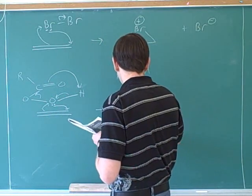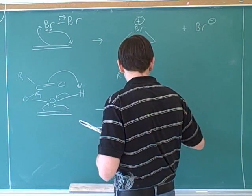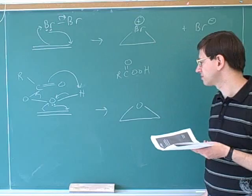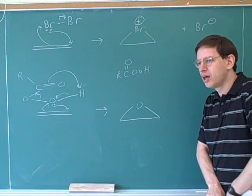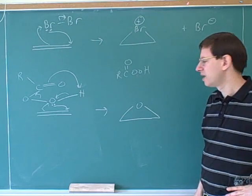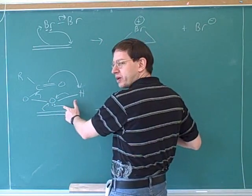What are our products going to look like? Well, the most important product is the epoxide. This is the bond that was formed by this left-hand arrow. And here's the bond that was formed by the right-hand arrow.